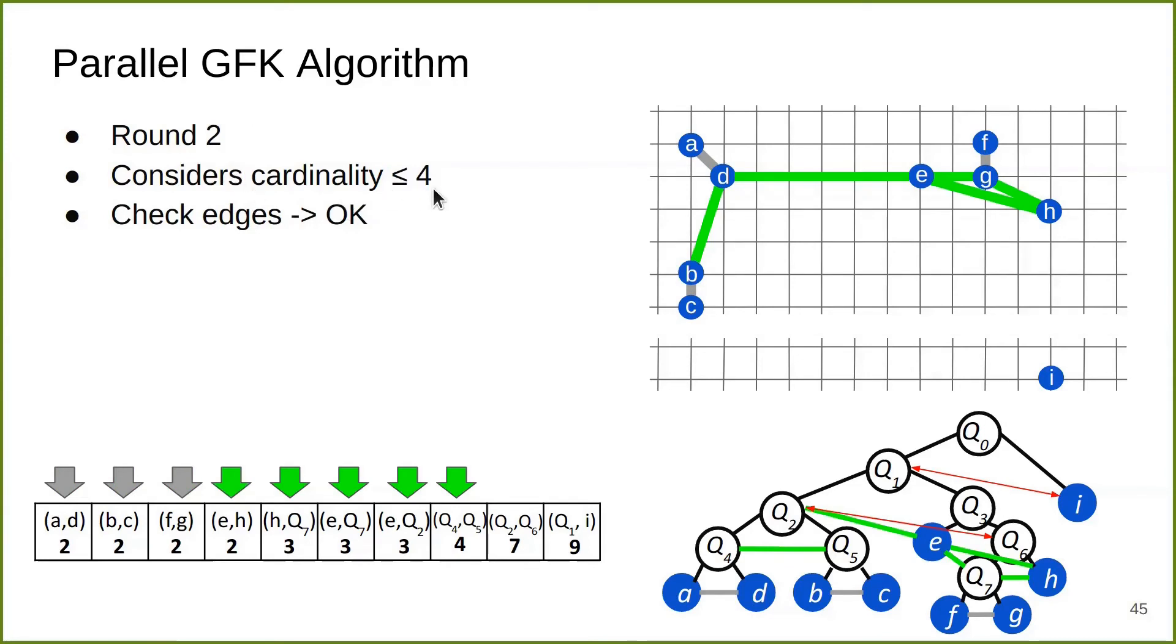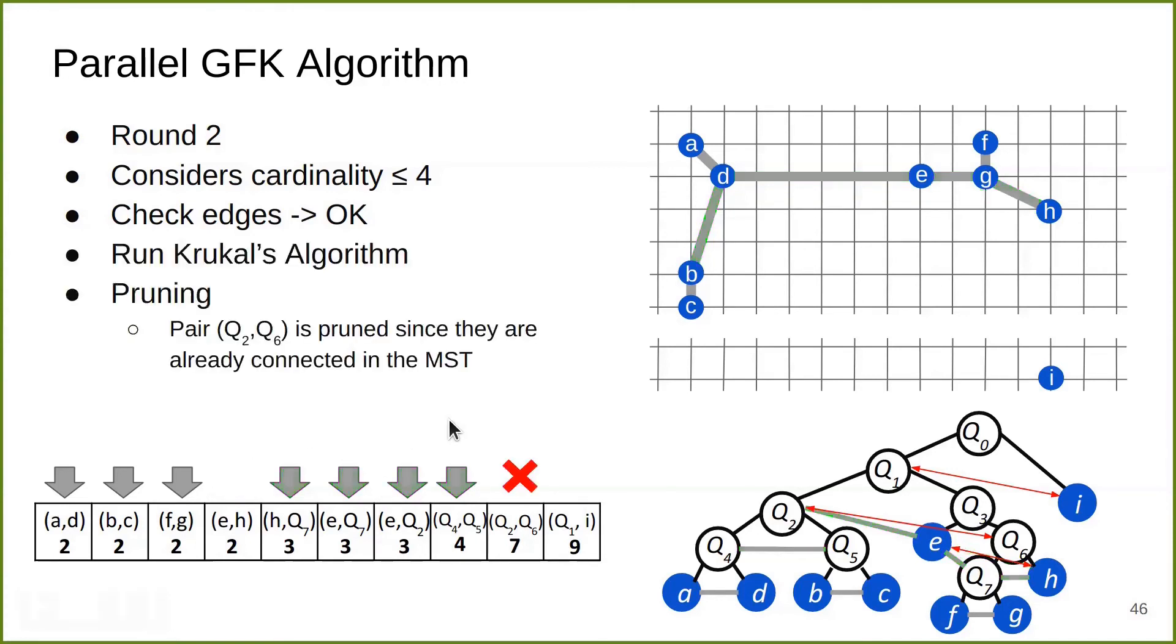In round two, we double the cardinality threshold and look at the pairs that qualify. Note that the pair that got pruned out in the first round gets processed again in this round. We check whether they can be processed in Kruskal's algorithm, and it turns out they all are. So we add them to Kruskal's algorithm and get a larger MST.